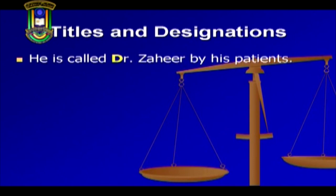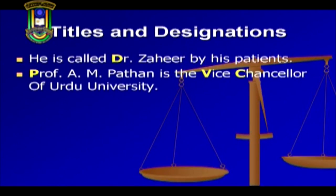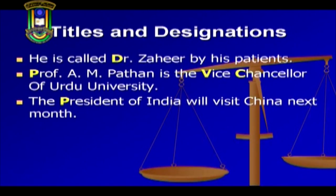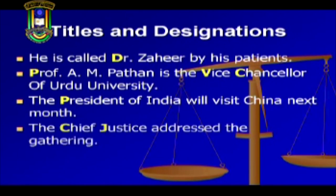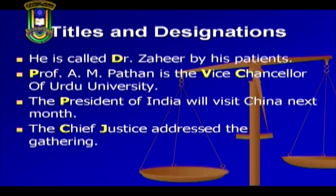Now let us proceed further and see how capital letters are used to indicate titles and designations. Study these examples: He is called Dr. Zaheer by his patients. Professor A.M. Pathan is the Vice Chancellor of Urdu University. The President of India will visit China next month. The Chief Justice addressed the gathering. In each of these examples, you would have noticed that the letter D of Doctor, P of Professor, V and C of Vice Chancellor, P of President and C and J of Chief Justice have been capitalized.